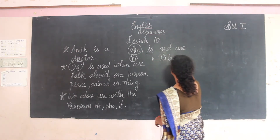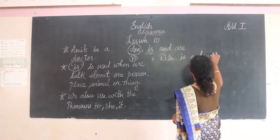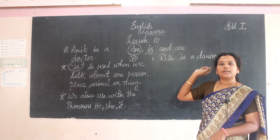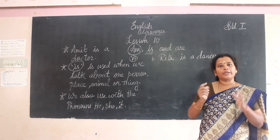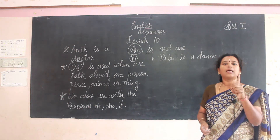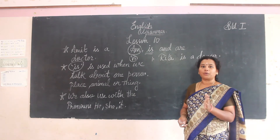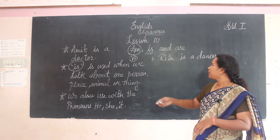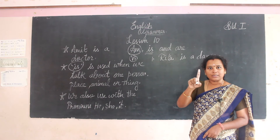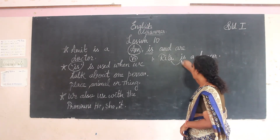Example number one: 'Rita is a dancer.' Rita is a girl — only one girl, singular. We already know singular means single. Plural means more than one. So Rita is one person, one girl — singular. We are using 'is' here.